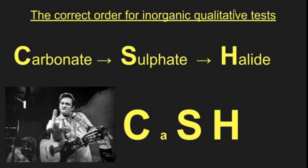So: carbonate first — add your dilute acid. If you don't get any bubbling, move on to the sulfate ion test — add barium 2+ ions. If you don't get a white precipitate, you can then move on to the halide ion test.